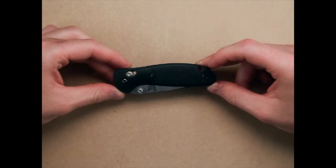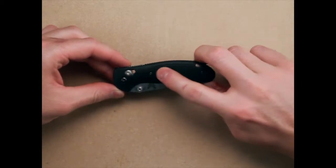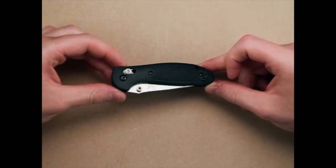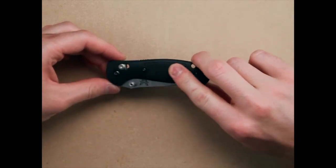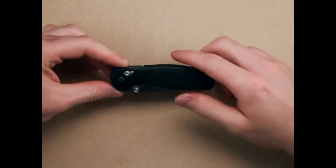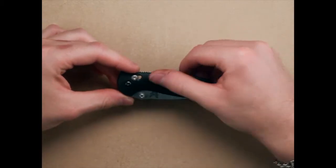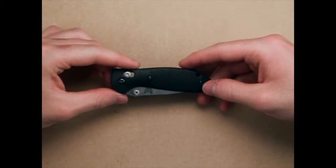It comes with Valox handles, which are basically fiberglass-reinforced nylon, just another polymer. Everyone's got a different name for that. But it's got this nice texturing which gives you a fair amount of grip, and they're contoured nice and rounded, which fits in your hand quite well.